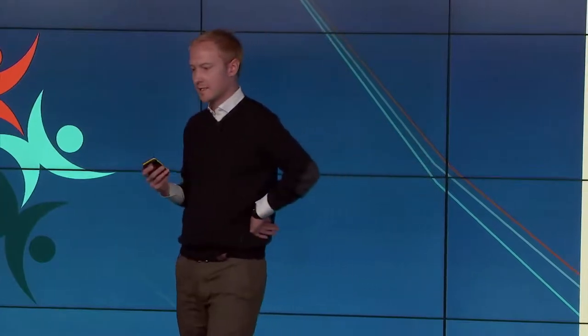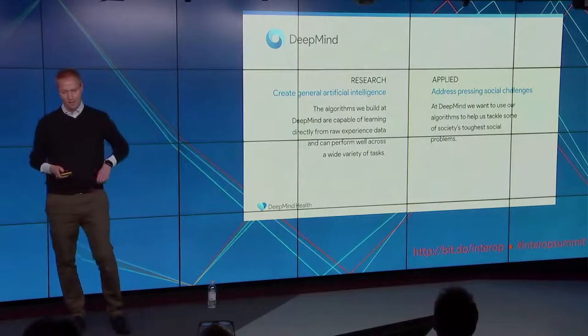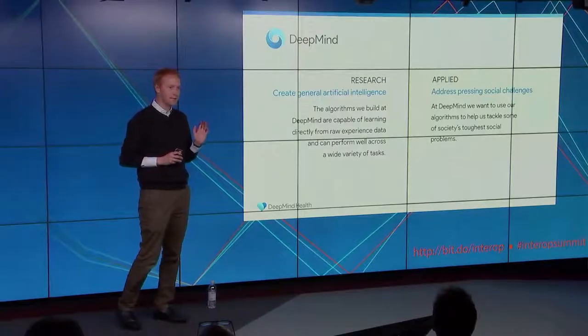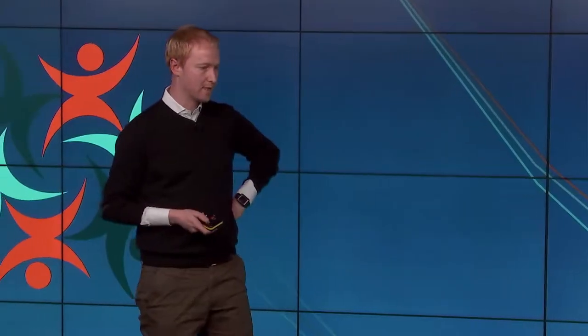So, DeepMind is entirely based in this building, on two floors of this building, and we're split broadly into a research team and an applied team. The research team has a grand mission of creating what's called general artificial intelligence. And this is the idea of creating algorithms that can be applied across a wide variety of domains. So, the same algorithm can be applied to a range of different issues or conditions. We then have an applied team, which myself, Kian, and a number of other people in the audience sit in.